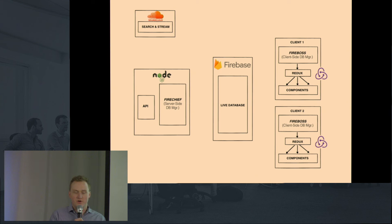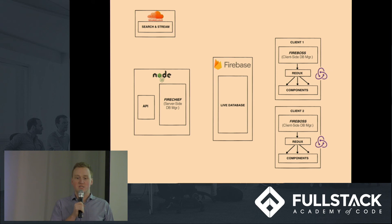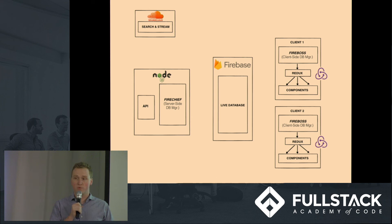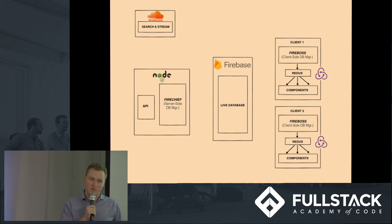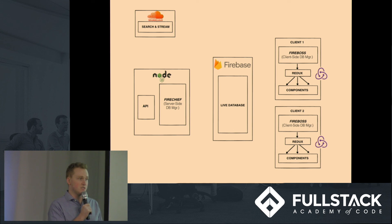Thanks, Shane. Our Node server has two primary functions. It allows clients to query and receive songs directly from the SoundCloud API, and it manages the flow of songs and voting in each party using a custom server-side database manager. This database manager monitors the state of every active party on Firebase and applies our queue logic to determine which songs get played next. Number of votes and time since added are the primary factors that affect a song's queue position. Both our server-side database manager, which we called FireChief, and our client-side database manager, which we called FireBoss, are modularized using JavaScript ES6 classes. A single instance of FireChief runs on our Node server, while a new instance of FireBoss is created for each front-end client. This setup allows us to easily manage complex real-time data flows and also makes our application highly testable.